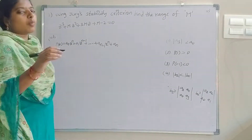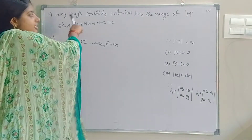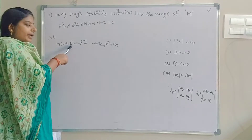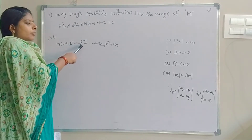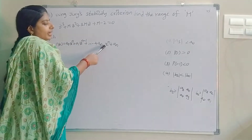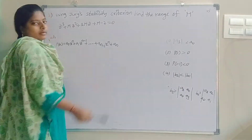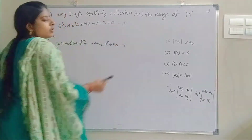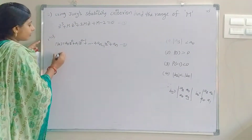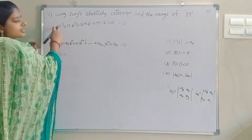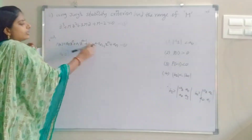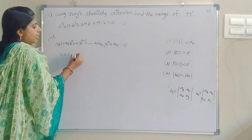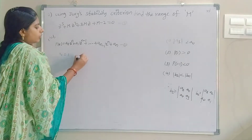The general polynomial equation for Jury's stability criteria is P(z) = a₀·zⁿ + a₁·zⁿ⁻¹ + ... + aₙ₋₁·z + aₙ. Comparing equation 1 and equation 2, we find the coefficients. The order is n = 3, so a₀ = 1.